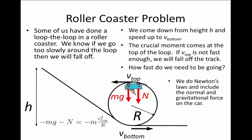If we write down Newton's second law, then we must have -mg - N = -mv²/r. In this case, we're writing down v_top squared because it's at this moment that our velocity equals v_top. r is the radius of the loop.